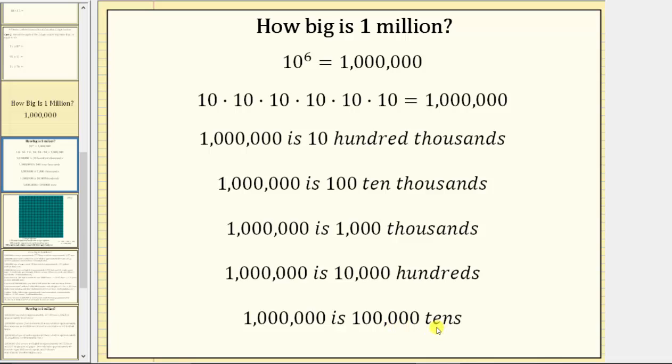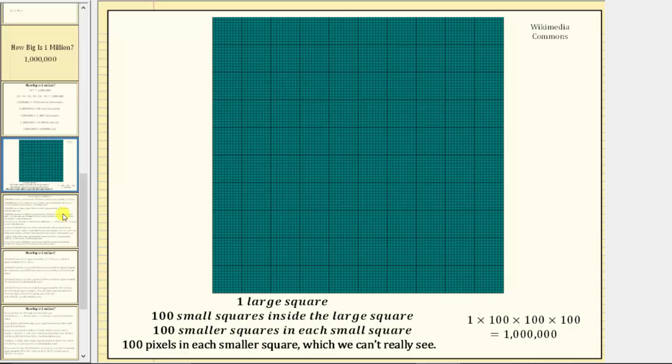Let's see if we can visualize one million. Looking at this image, we have one large square. There are 100 small squares within this large square. And if we focus on one small square, there are 100 smaller squares within each small square.